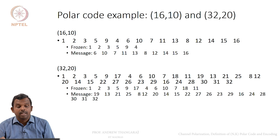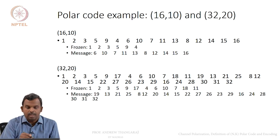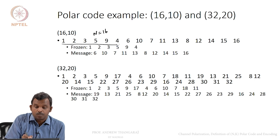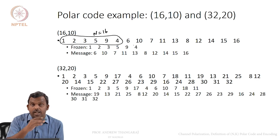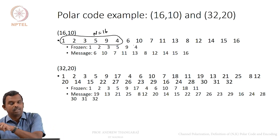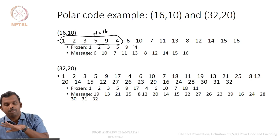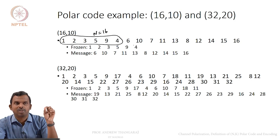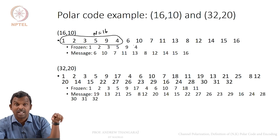Here is a 16, 10 example. For N equals 16, the reliability sequence starts 1, 2, 3, 5, 9, and then 4, 6, 10, and so on. You need to freeze the first 6 positions: 1, 2, 3, 5, 9, and 4 are frozen to 0 in the tree with 16 leaf nodes. The message goes into the remaining positions, you encode as before, and each codeword bit is some XOR combination of M1, M2, M3, etc. You can write out a generator matrix and have a definition for a 16, 10 polar code.